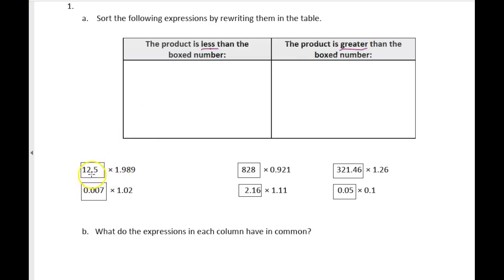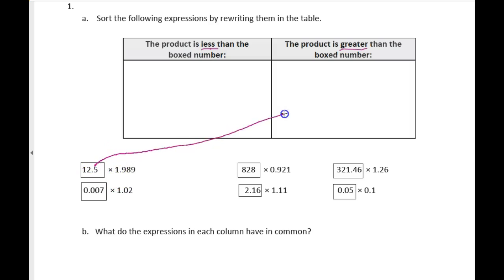Twelve times one is twelve and five tenths times one — that stays the same. But one and nine tenths is almost two, so that's actually going to almost double it. So that expression is going to get greater.